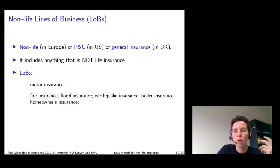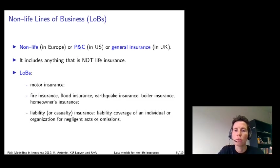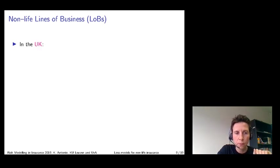Examples of products or lines of business are motor insurance, car insurance, fire insurance, flood insurance, and liability or casualty insurance.